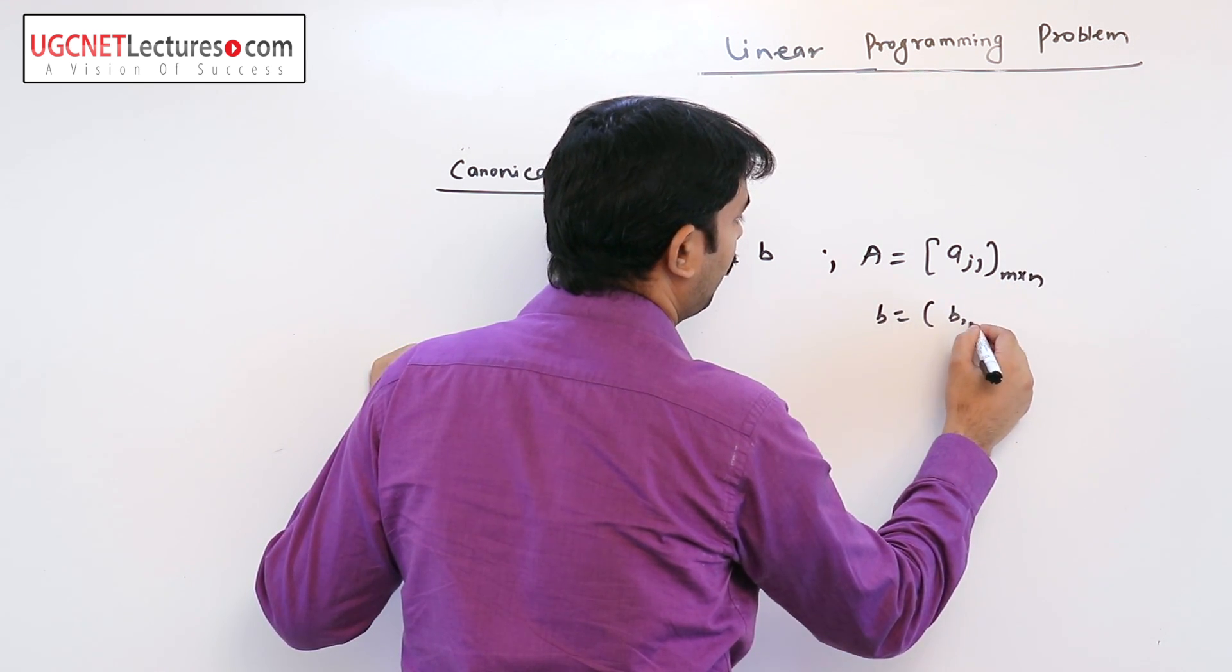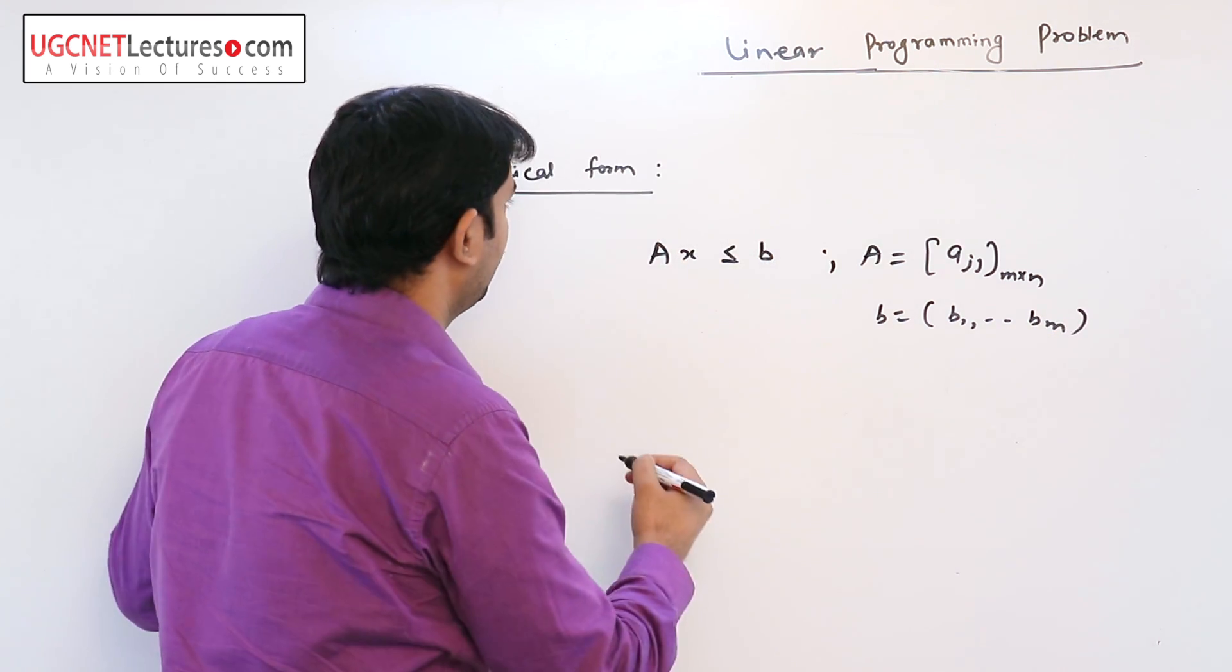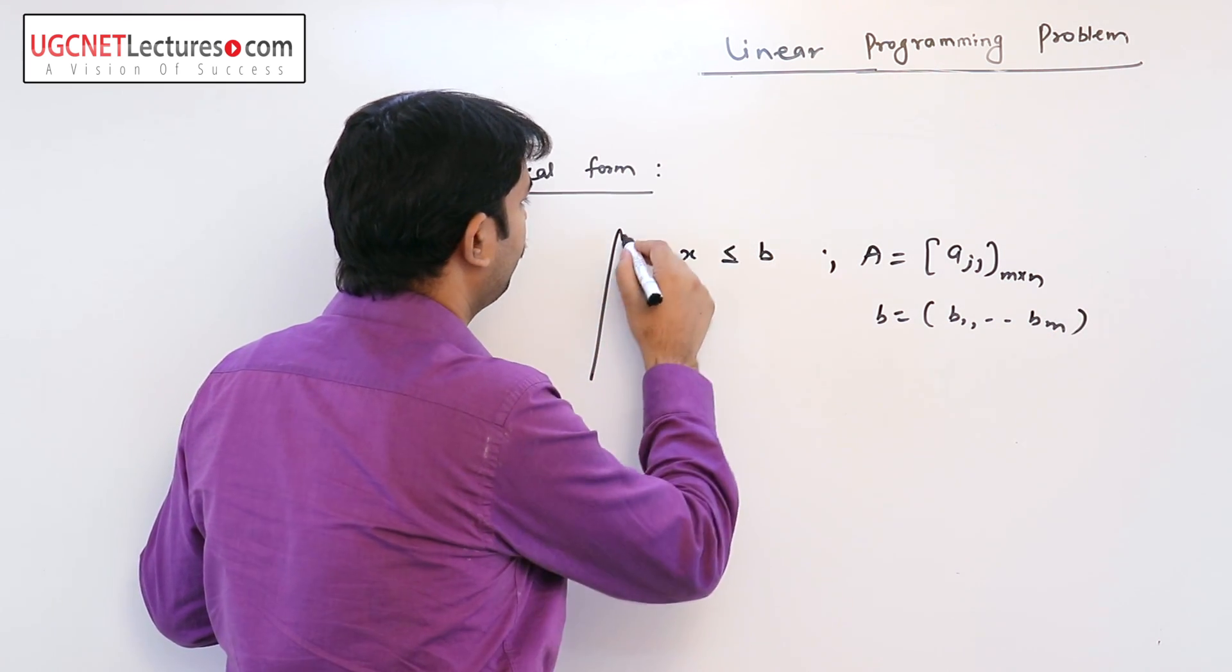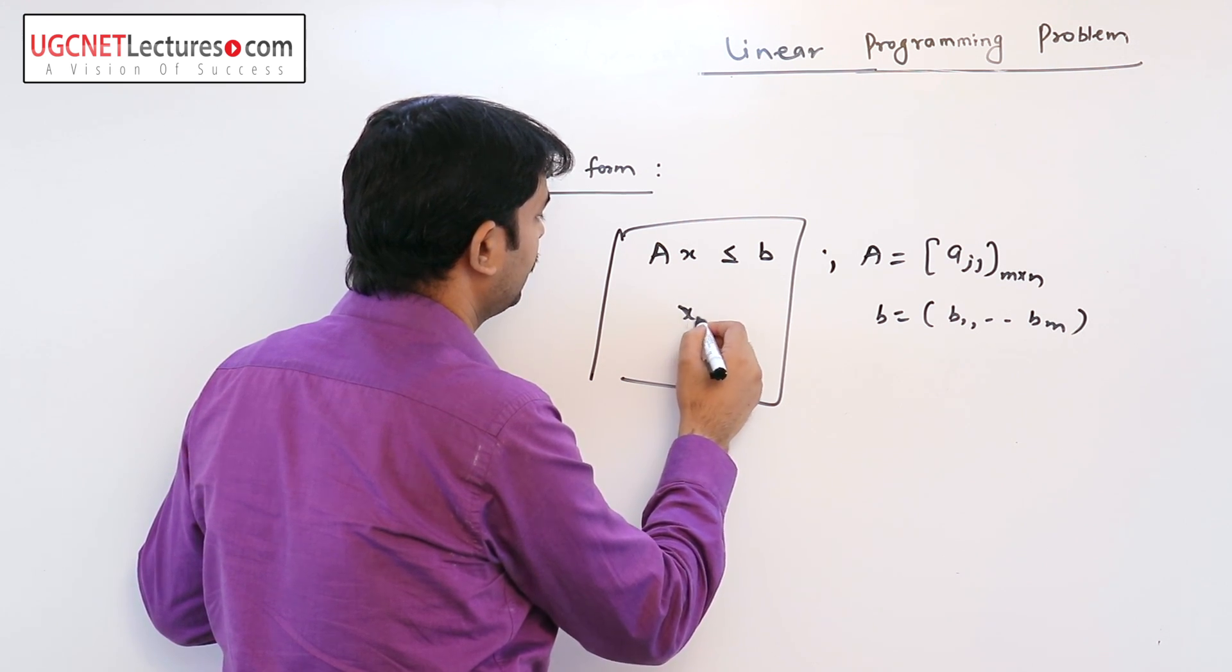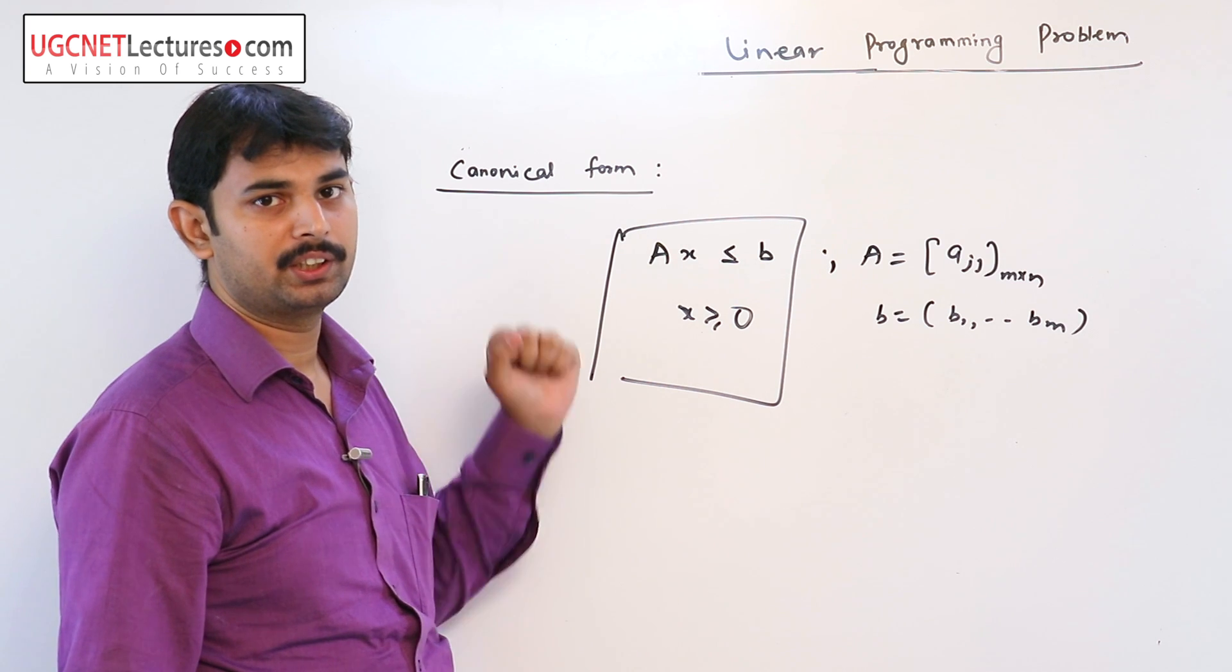b is b1 to bm the coefficients. This is this form and all the x greater than equal to 0. This form is known as canonical form.